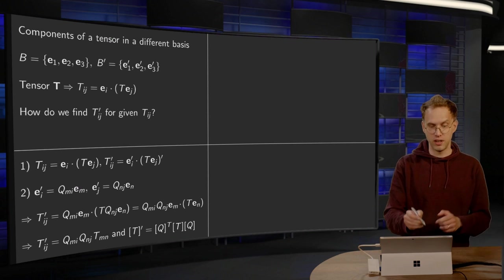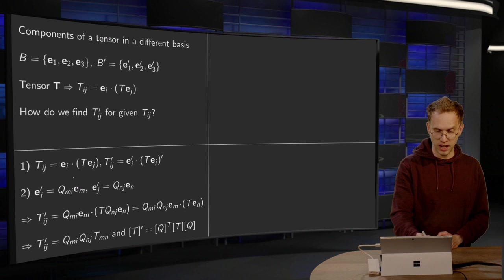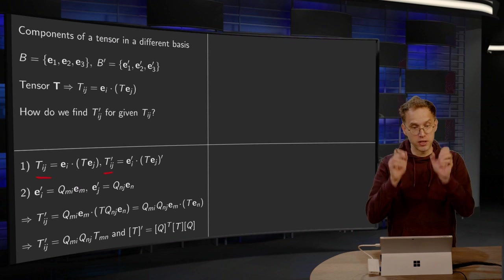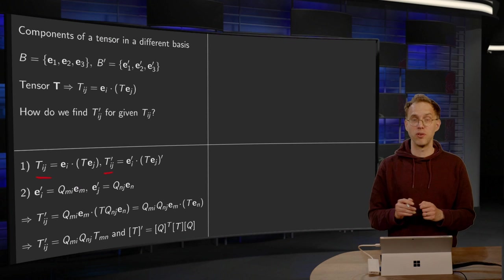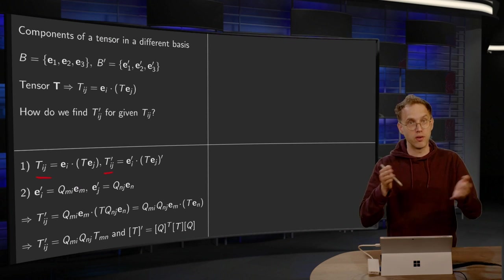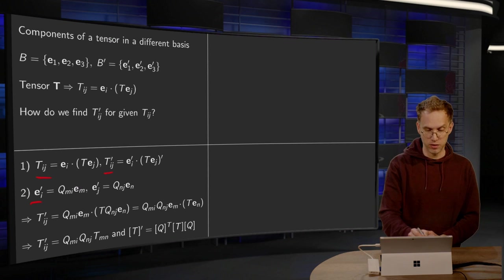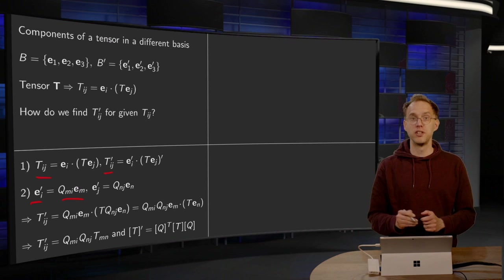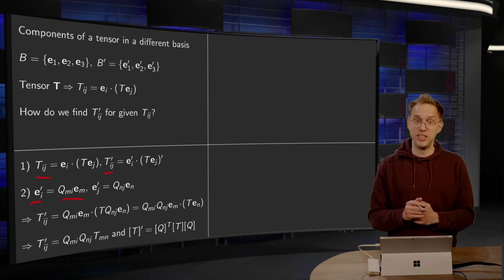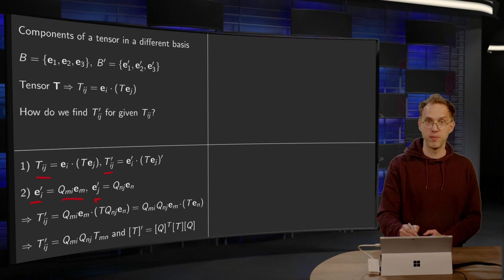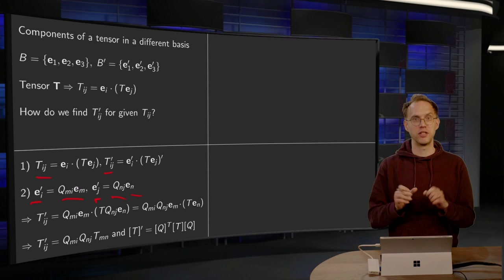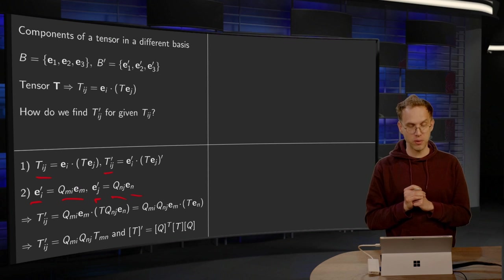First of all, the general rule for how to find the T_ij and the T'_ij using our basis vectors. And second, we need to know how we convert our basis vectors. So we have e'_i is always Q_mi·e_m. We can do the same trick for e'_j. e'_j is then Q_nj·e_n. And I use a different summation index because we will need them both later on.